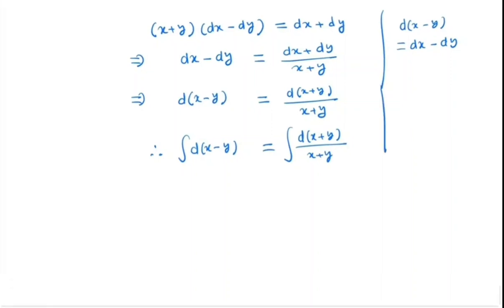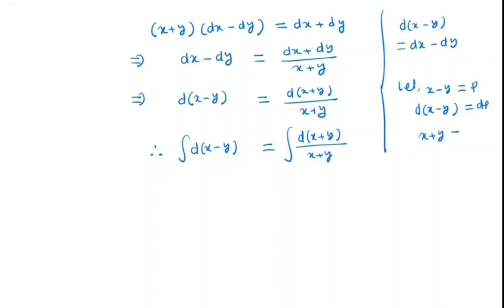Now for the left hand side integral, put x minus y equal to p, so d(x minus y) equals dp. And for the right hand side, we put x plus y equal to q, so d(x plus y) equals dq.